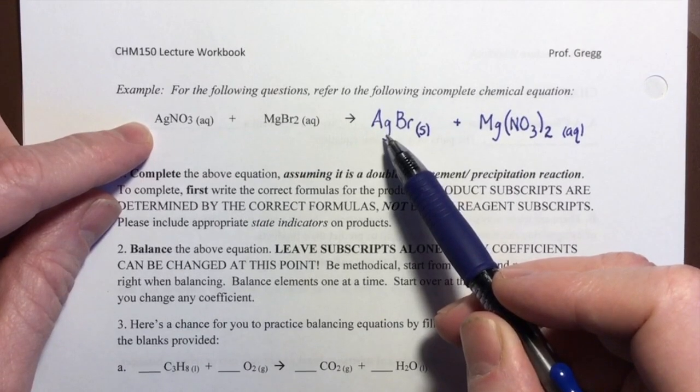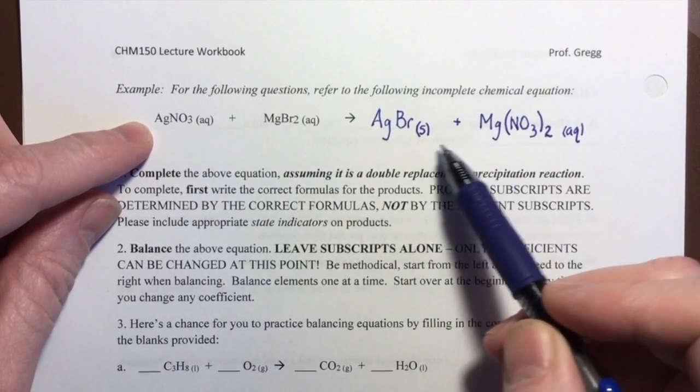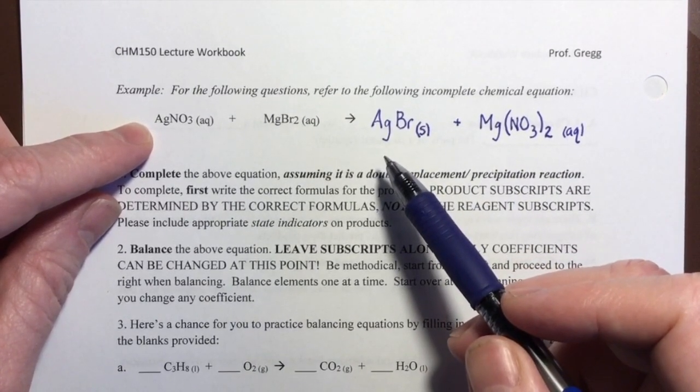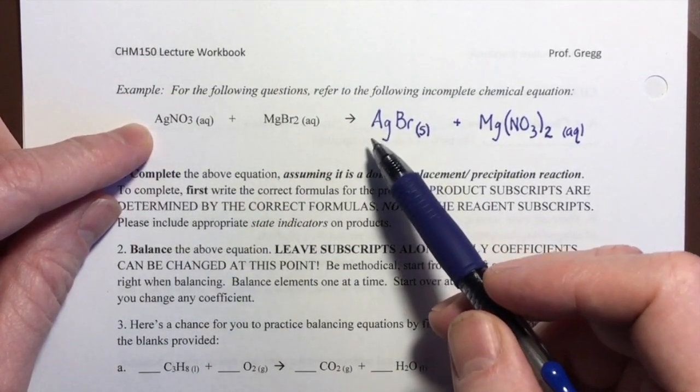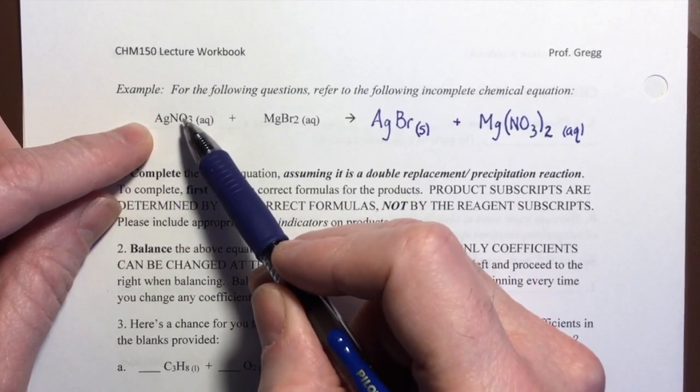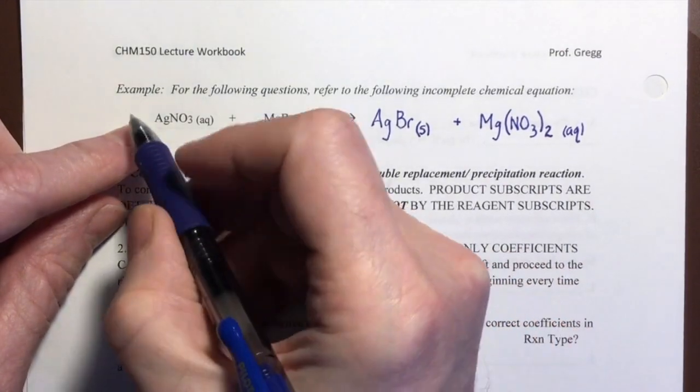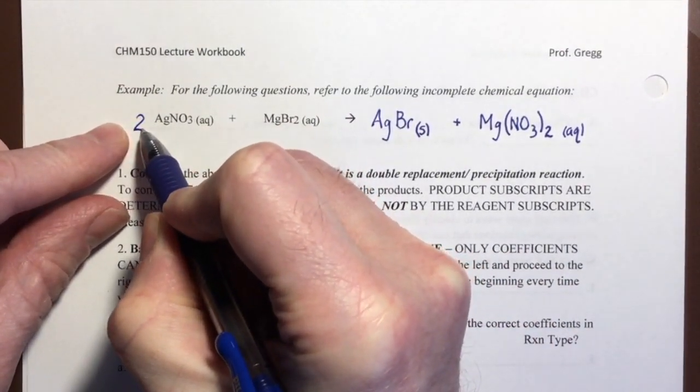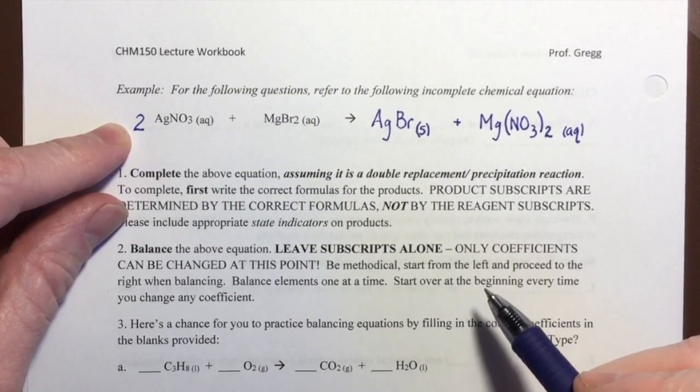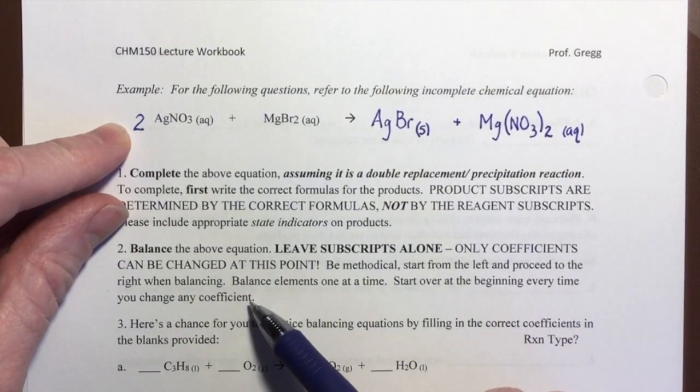That may change because I may have to change something else as I go and then come back and fix the silvers. But for now, I have one silver, one silver, one nitrate ion, two nitrate ions. So I need a two over here. And I can only change the coefficients at this point, not the subscripts. So it says right here, start over at the beginning every time you change any coefficient. And the reason we do that is we want to make sure that if we have corrected something here to balance it, that we didn't mess up something that we had already fixed. So we start over to the beginning to confirm that our balancing is still working.